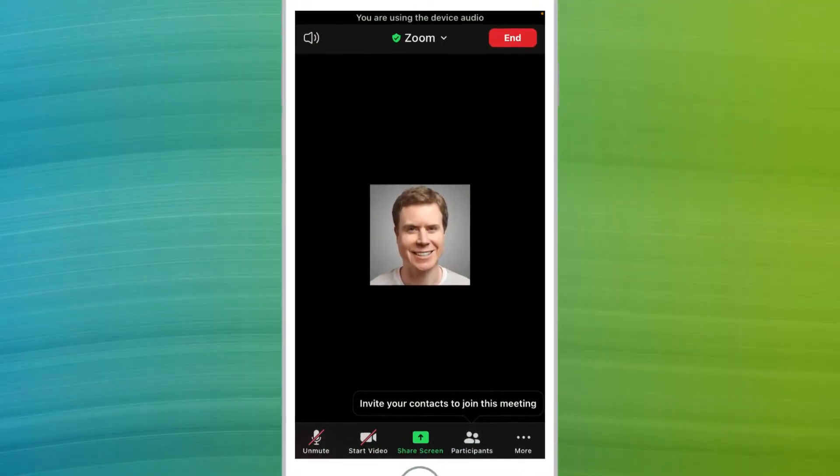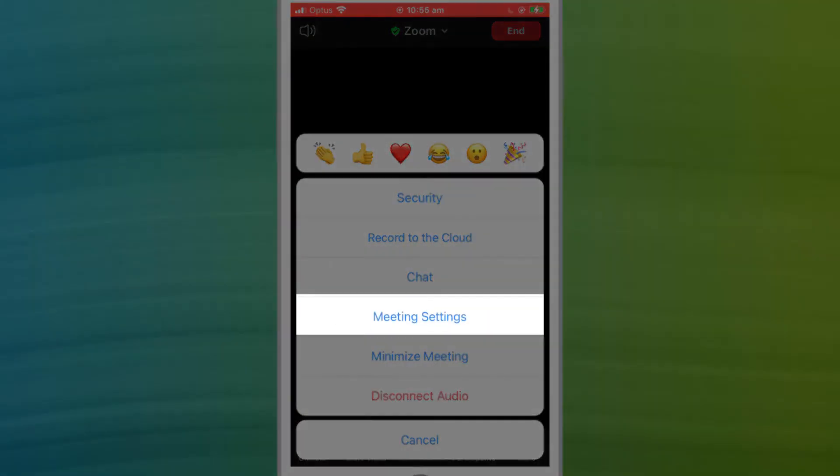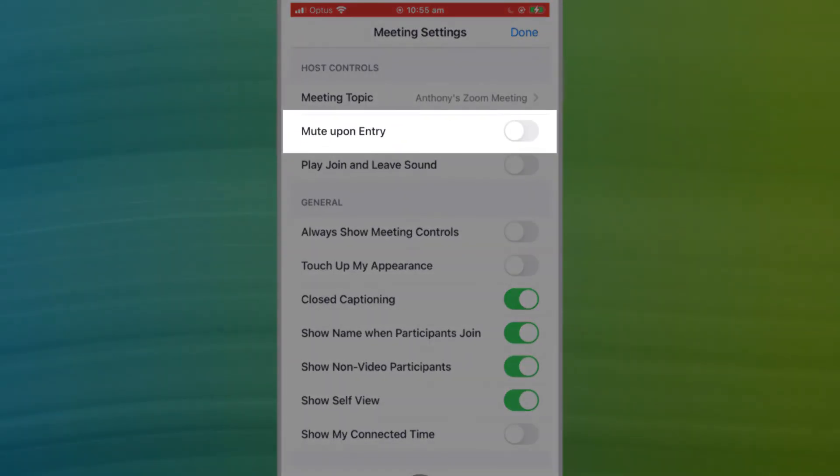In a meeting, click on the ellipsis to bring up the options menu and choose meeting settings. Here, you can enable mute upon entry.